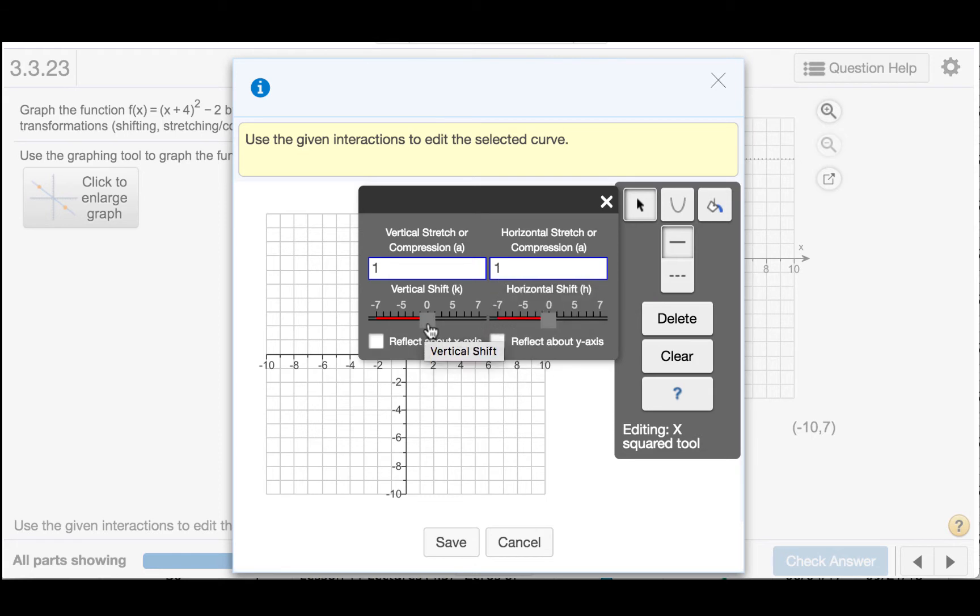But we will do a vertical shift. We already decided that this graph would be shifted down 2 units. We will also do a horizontal shift. We decided that this graph would be shifted to the left 4 units.